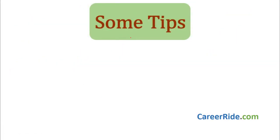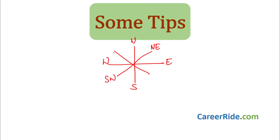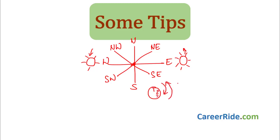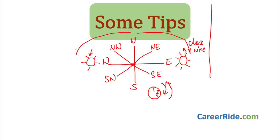Now let us see a few more tips regarding directions. Draw the diagram: North, South, East, West, and the secondary directions — Northeast, Southwest, Northwest, and Southeast. The sun rises in the East and sets in the West. What is clockwise and anti-clockwise? The clock moves 1, 2, 3 — that is clockwise. The exact opposite direction is anti-clockwise. Whenever a person is making a clockwise turn, the person is going like this. Anti-clockwise is the opposite direction.